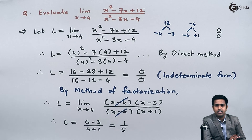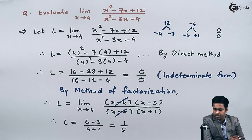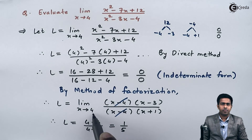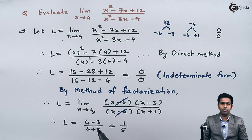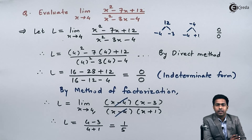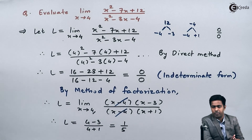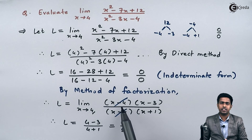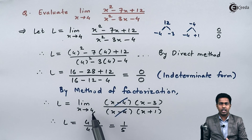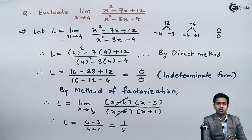Observe the relation between the cancelled factor and the given limit. The limit is x tends to 4, and the factor we cancelled was (x - 4). In factorization, wherever the limit is a certain number, we will always find the factor with the opposite sign in the function, and it will always be cancelled. Here, the limit is +4 so the factor is -4. If next time the limit were -2, the cancelling factor would be +2. So the final answer is L = 1/5.